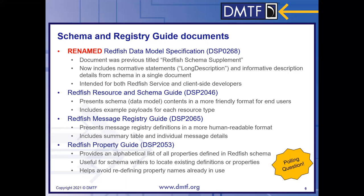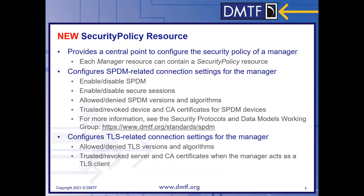The other two documents have just been updated as always for this release. The relatively new message registry guide will include the new sensor registry as well — DSP 2065 has all of those message registries in one place. And lastly, the property guide, as always, for folks trying to look things up in dictionary order. Now I'll hand it over to Mike, who will get into the meat of the new pieces within the schemas.